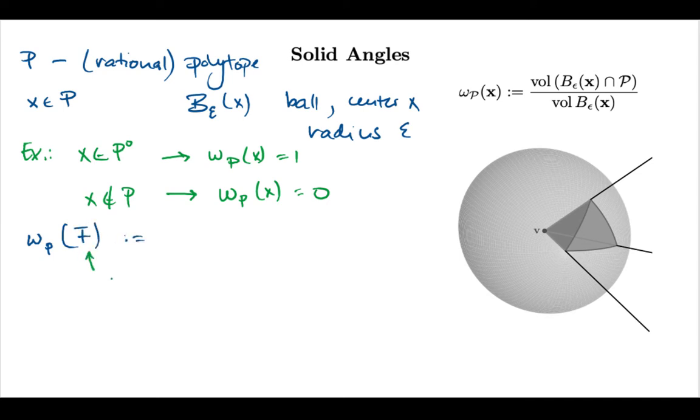So this F here is a face of my polytope. By saying I will measure angle of any point in the relative interior of my face. So again this is invariant as I move along my face as long as I'm staying in the relative interior and that allows me to make this definition.